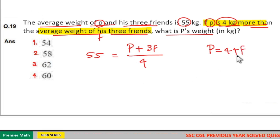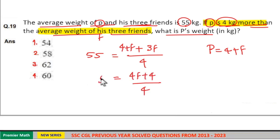And if you substitute P is equal to 4 plus F, this will become 4 plus F plus 3F is equal to 4F plus 4 divided by 4 is equal to 55.